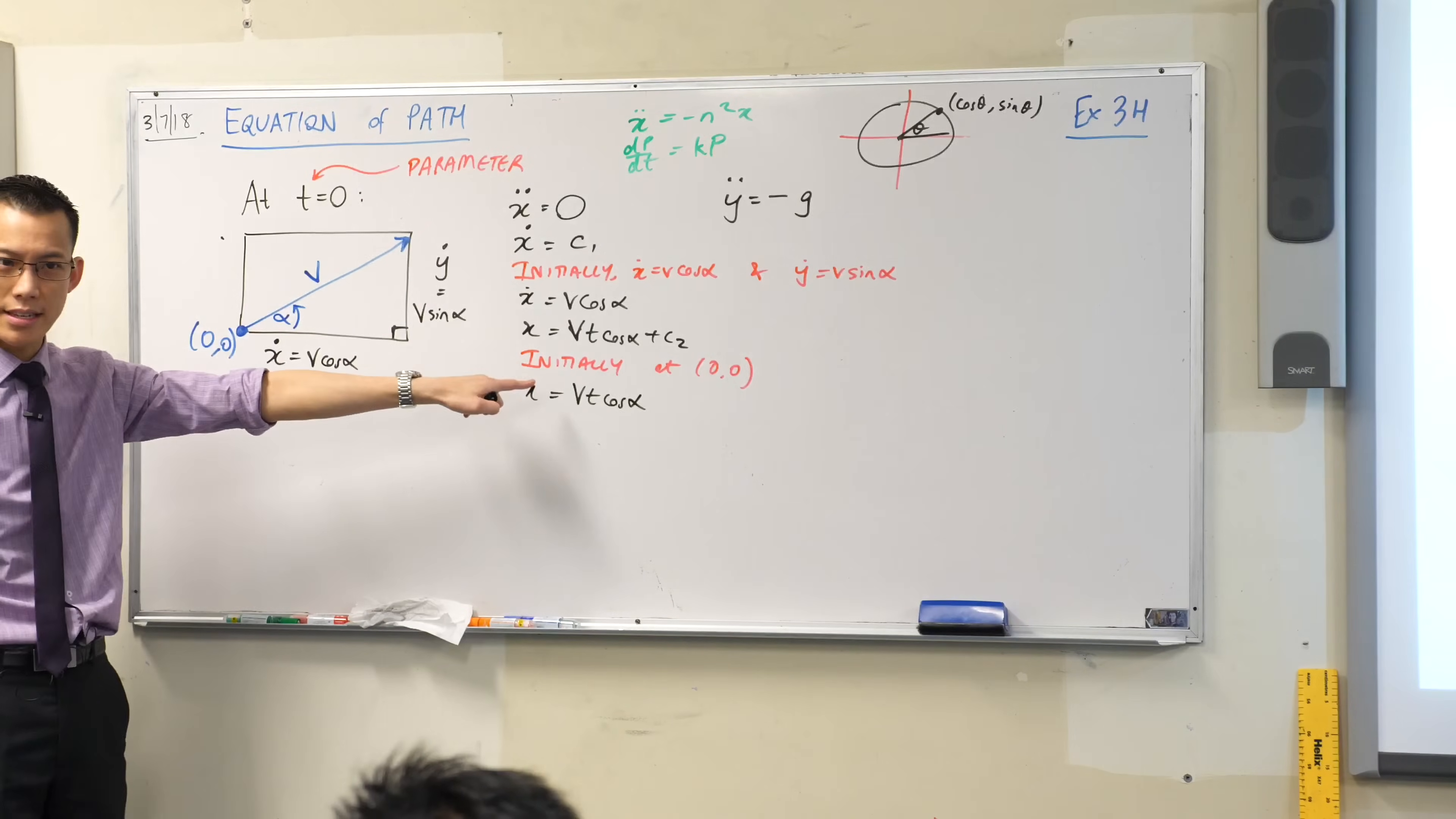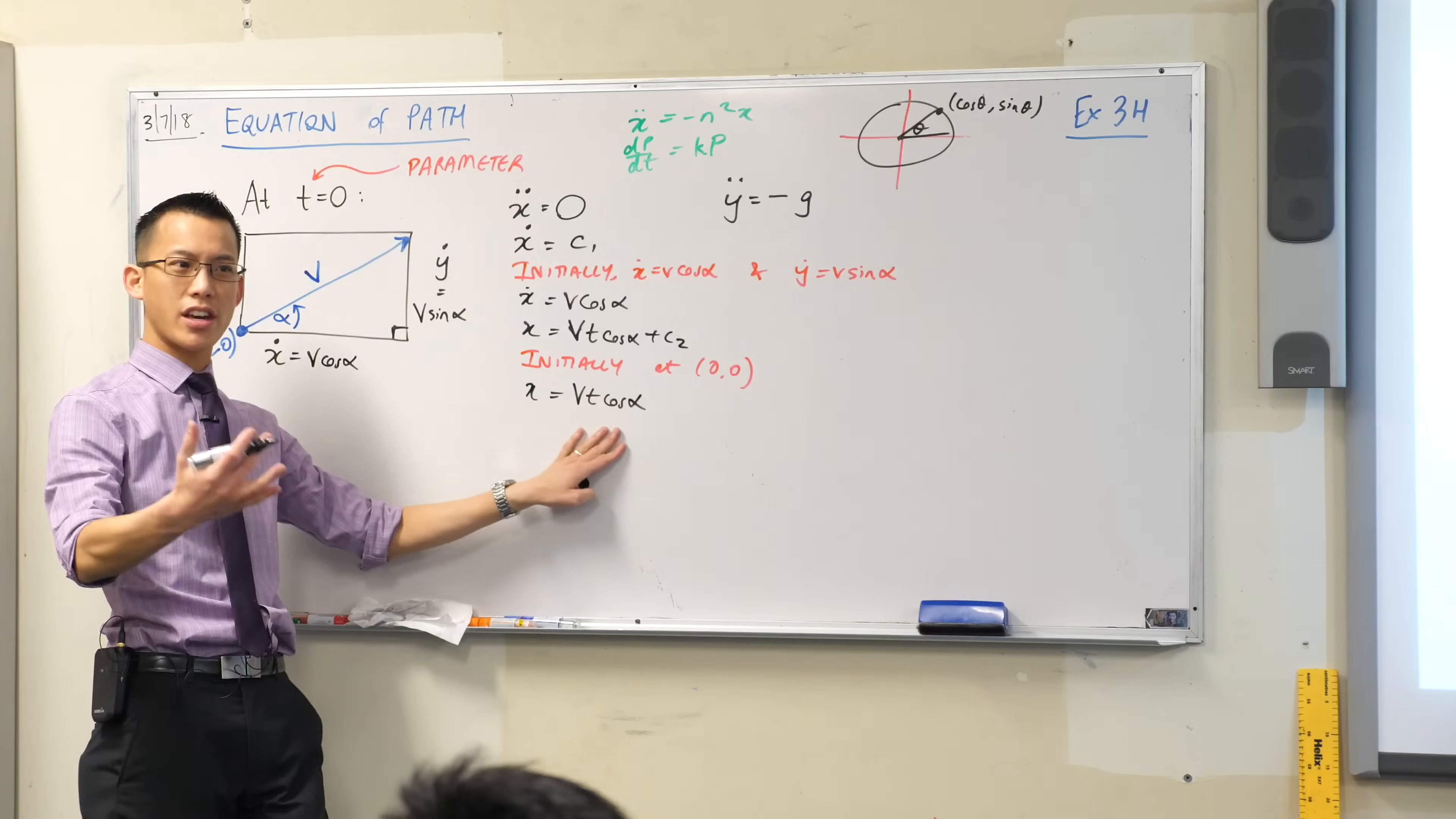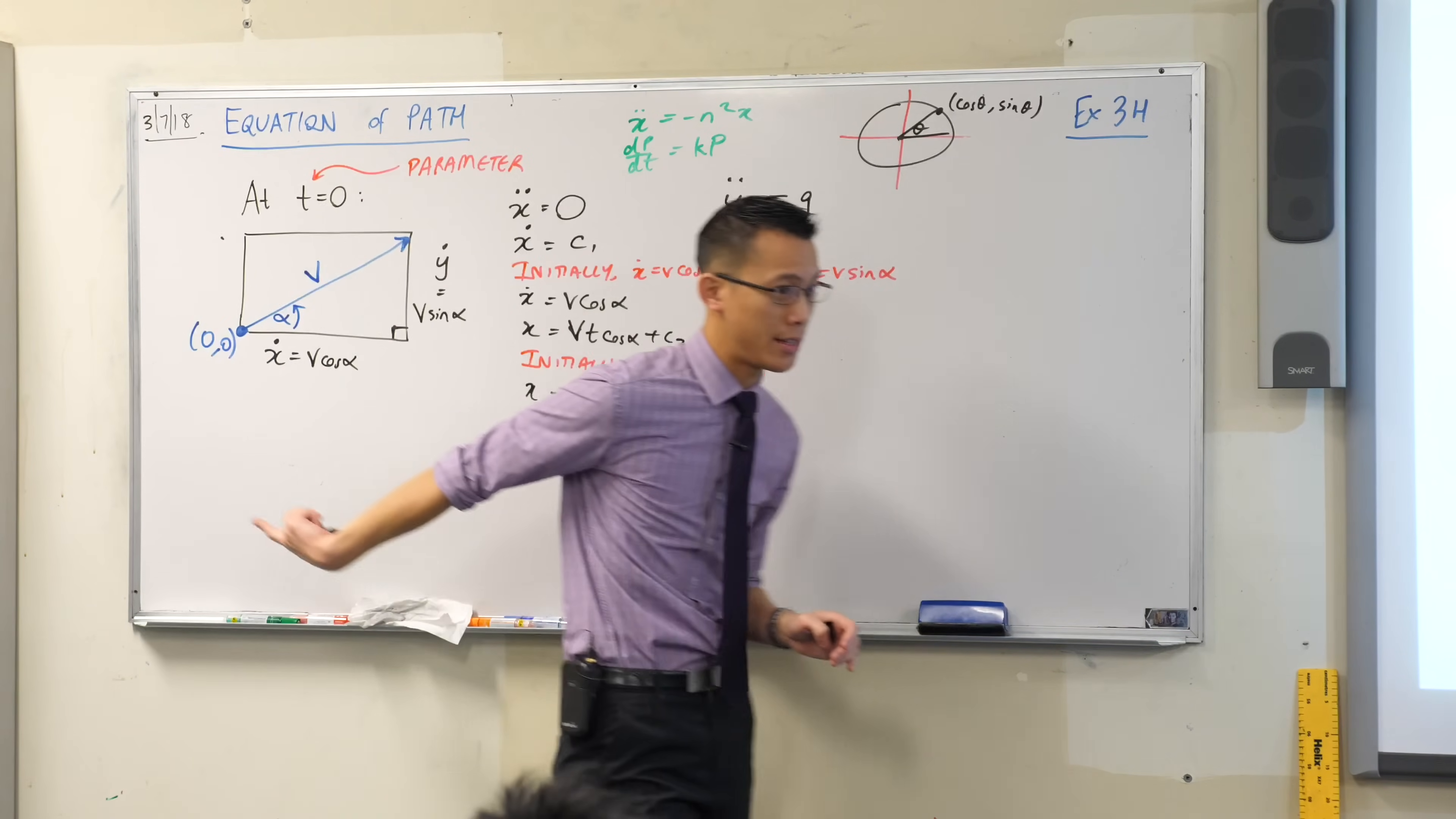Now, we'll come back to this in a second, because we want to eliminate t out of this, right? I've got a parametric equation, and I don't want a parametric equation. I want a Cartesian point, so we're going to return to this equation in a minute.